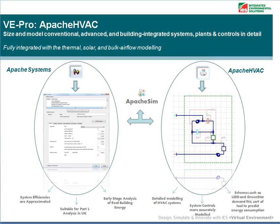Apache Systems ideally control systems to condition spaces exactly to set points via predefined HVAC system type algorithms, with minimal room, system and plant inputs within Apache Sim. You will see a more accurate representation of how the controls and systems are working to keep spaces within comfortable conditions using the Apache HVAC module.